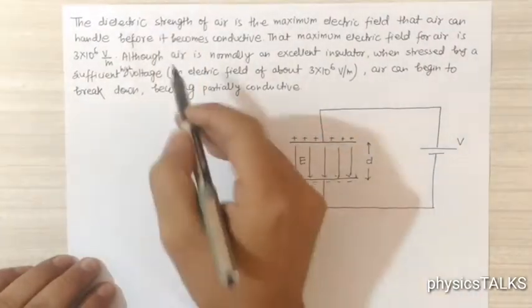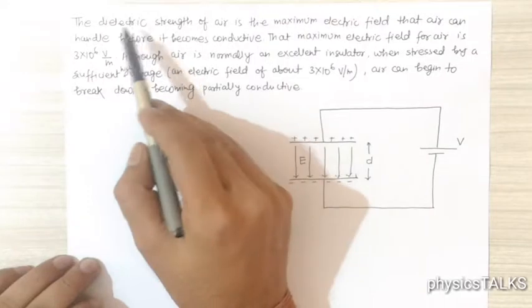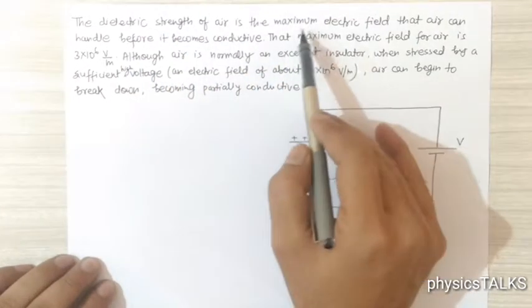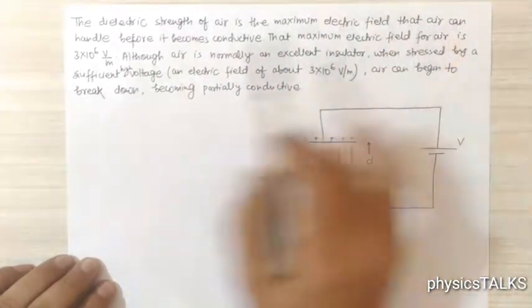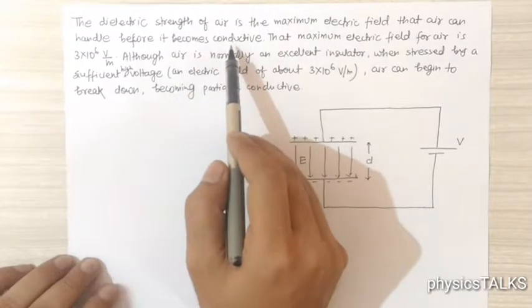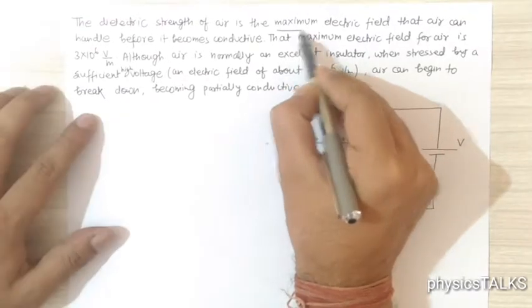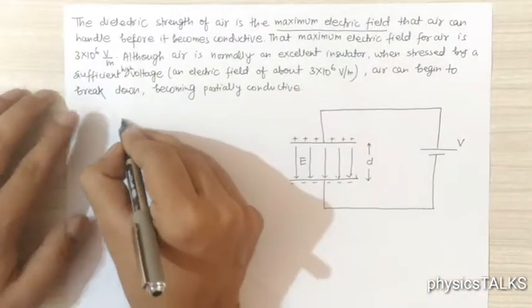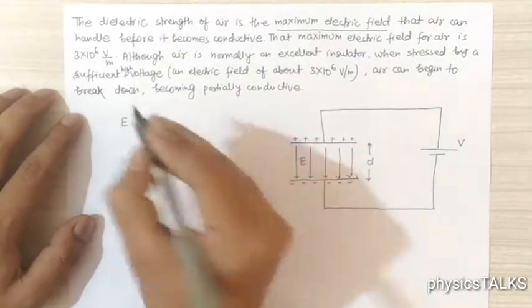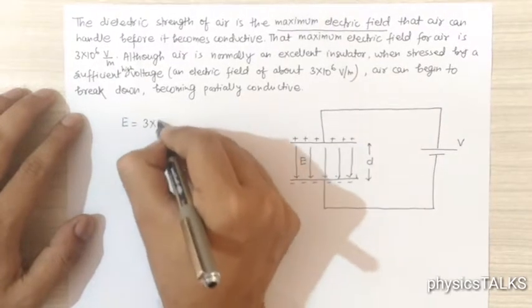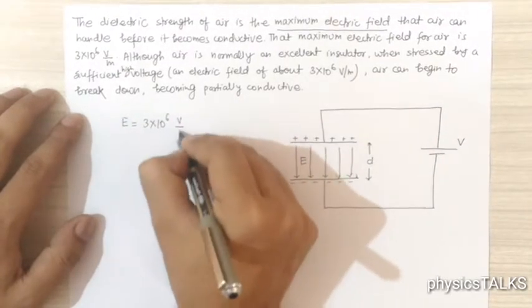The dielectric strength of air is the maximum electric field that air can handle before it becomes conductive. So dielectric strength of air is the maximum electric field E, which given in the question is 3×10^6 volt per meter.